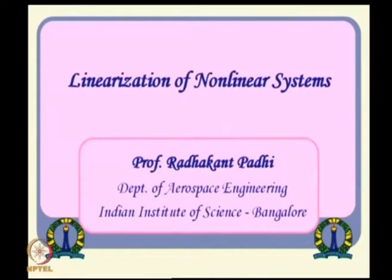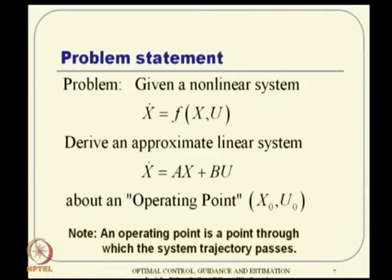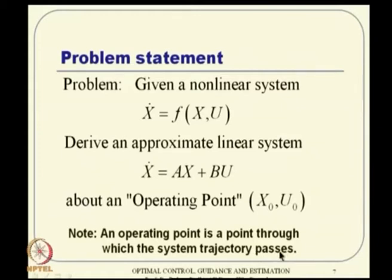Coming to the linearization of nonlinear systems — as I mentioned, linear systems are typically linearizations of nonlinear systems about some operating point. The problem statement is: given a nonlinear system x-dot equal to f of x, u, can you derive an approximate linear system about an operating point x0, u0? Remember, the operating point is not necessarily an equilibrium point — by definition it is a point through which the system trajectory passes. So even a transient trajectory can be a potential operating point. That is how sometimes we linearize about a trajectory, continuously getting new linearized systems, meaning the A and B matrices become time-varying.